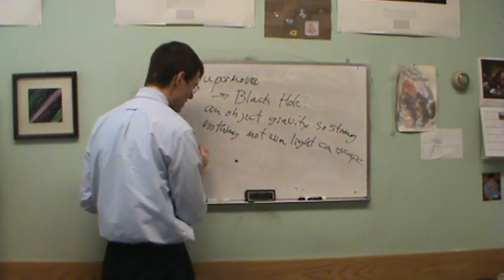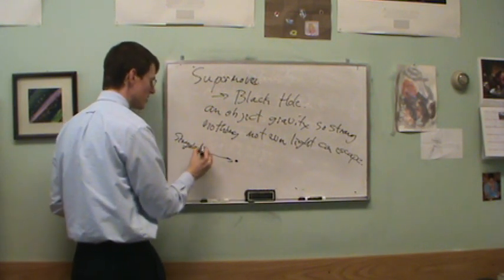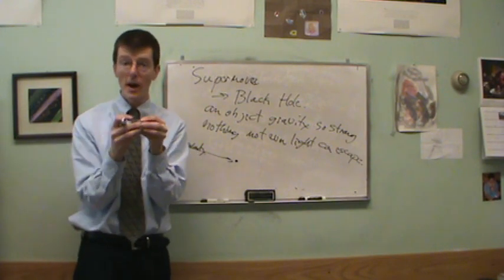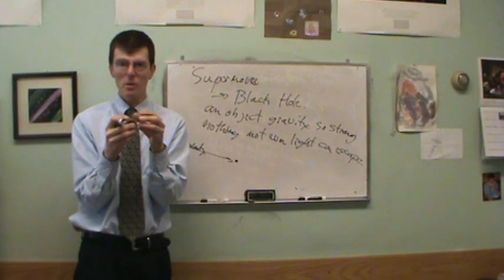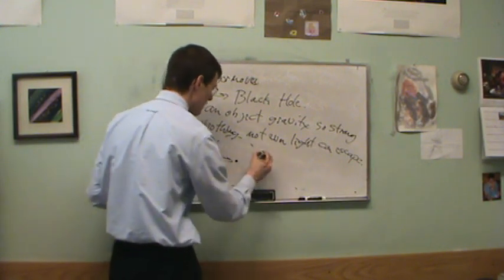The mass of the black hole is crushed into a single point at the center called a singularity. That's the heart of the monster. It has no size but it has some amount of mass, but it has no volume at all. So it's a point of infinite density. This is surrounded by what we call the event horizon.